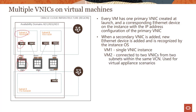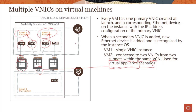VM2 has two VNICs — VNIC2 and VNIC3 — and the interesting thing is these two VNICs are in two different subnets within the same VCN. VNIC2 is in Subnet A and VNIC3 is in Subnet B. We would do this because this particular virtual machine might be a virtual networking appliance monitoring those two subnets for security, intrusion detection, or other purposes.